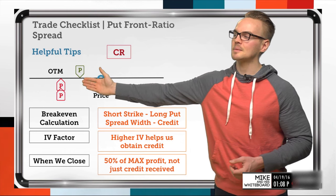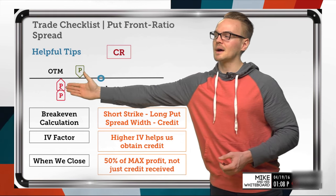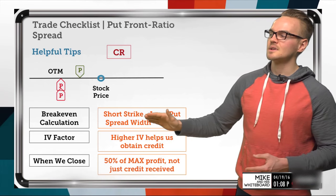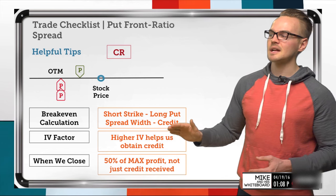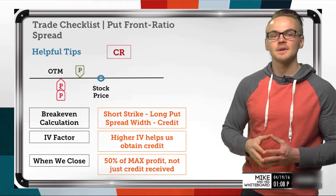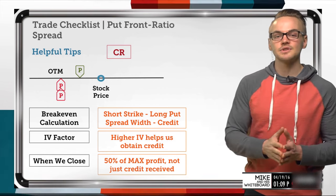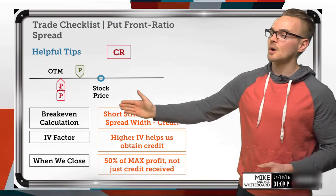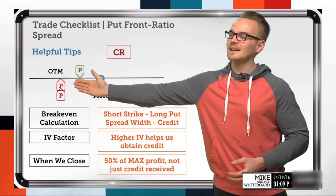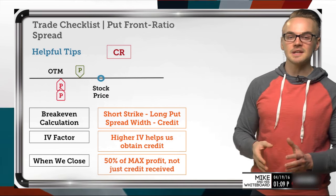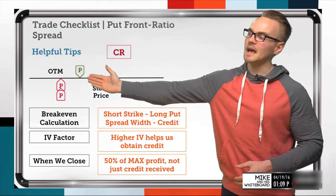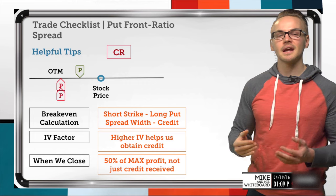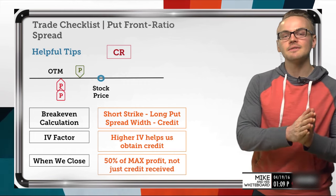Both short options are on the 90 strike and we collected 50 cents of credit. I take my short strike of 90, subtract the long put spread width of five points, then subtract my 50-cent credit. That brings me to 85 from the long put spread, then another 50 cents brings me down to 84.50. So even though my short strikes are at 90, my break even is at 84.50 because that maximum profit on the long put spread of five points offsets my break even further to the downside.